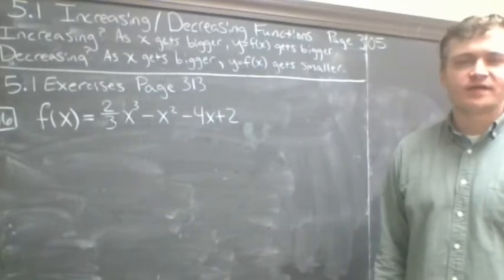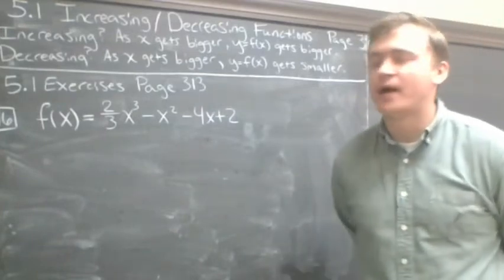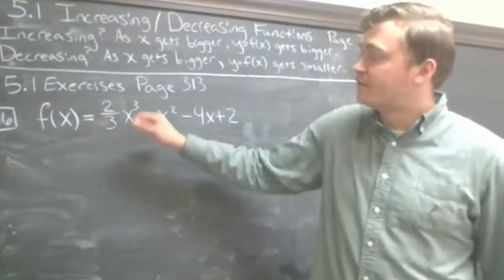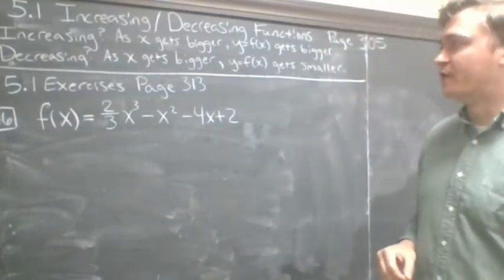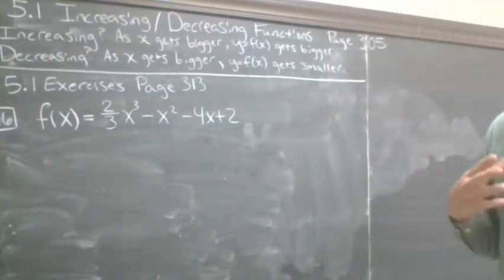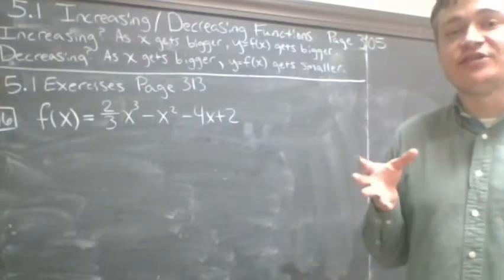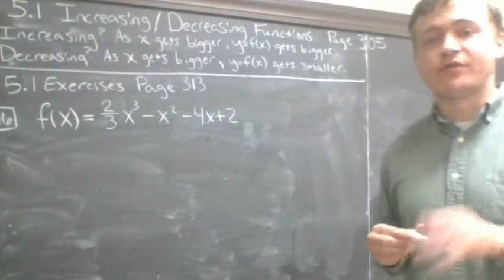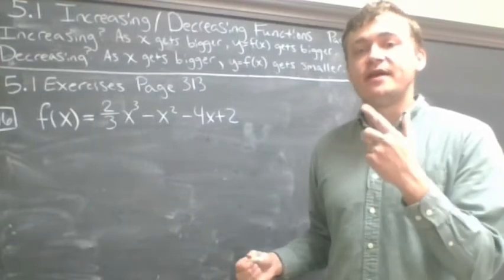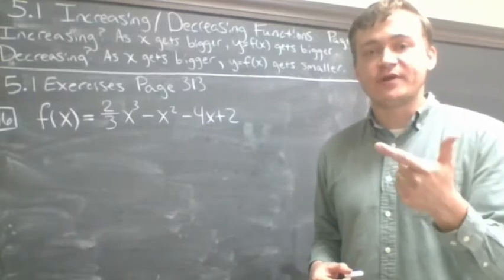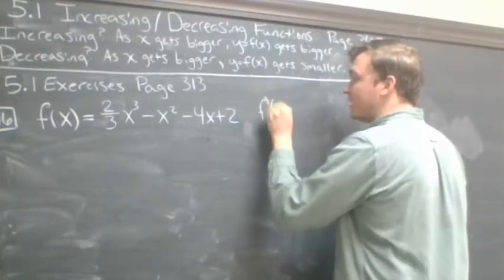Looking at problem 16 from the 5.1 exercises, we have the function 2/3·x³ − x² − 4x + 2. When we take the derivative of this cubic function, the derivative will be a quadratic — we're always dropping down a peg with polynomial functions. We want to find the critical numbers, then test each interval to determine where we are increasing or decreasing. Those are the three tasks: find critical numbers, find increasing intervals, find decreasing intervals.